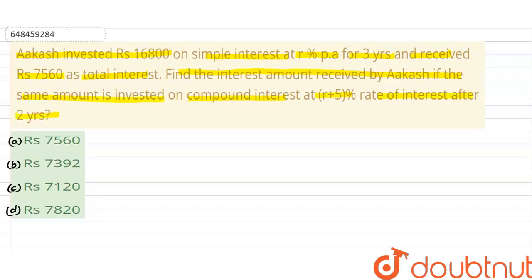The options are: 1st is Rs. 7,560; 2nd is Rs. 7,392; 3rd is Rs. 7,120; and the last option is Rs. 7,820.